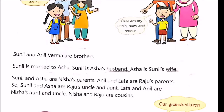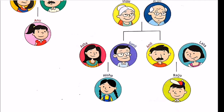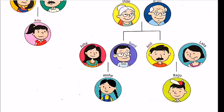Now, Sunil and Anil are brothers. Sunil is married to Asa — Asa is his wife and Sunil is her husband. Sunil and Asa are Nisha's parents, so Nisha is their daughter. Sunil and Asa have a daughter and her name is Nisha.